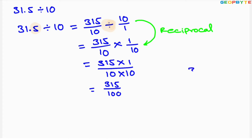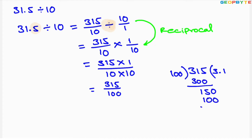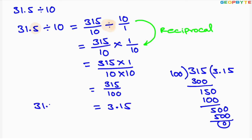Now dividing 315 by 100: 100 threes are 300, remainder is 15. We place a decimal point and add zeros. 150 divided by 100 gives 1 remainder 50, then 500 divided by 100 gives 5, remainder 0. So 315 divided by 100 equals 3.15. Therefore 31.5 divided by 10 equals 3.15.